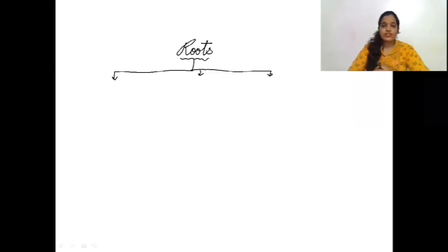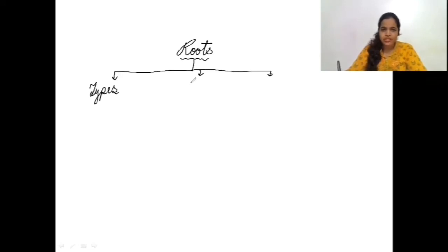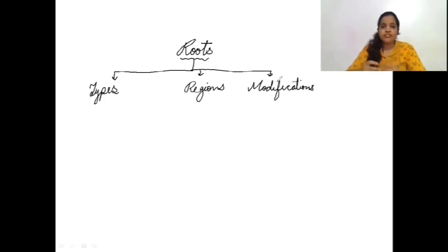Now let's study about the roots in detail. We will be studying roots in three portions. The first portion is the types of root system. Second, we are going to study the regions of root — meaning we will see the structure of the roots. And the third one is modifications: what are the changes made in the structure of the roots to perform different functions.